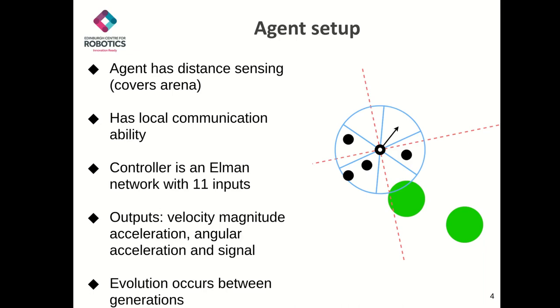The agents also have the ability to communicate locally with their neighbors. The agent will accumulate signals within discretized regions as seen by the blue circle in the image. Lastly, the agent will be able to detect the energy change at each time step. The agent is governed by an Elman network with 11 inputs, one for each of the distance sensors, signaling regions, and one for the energy change.